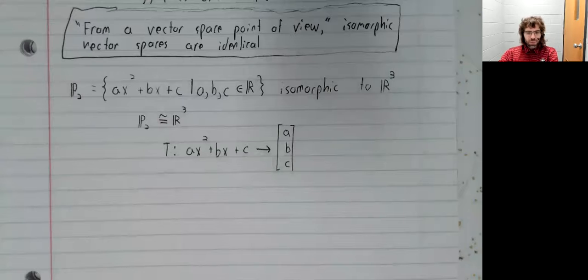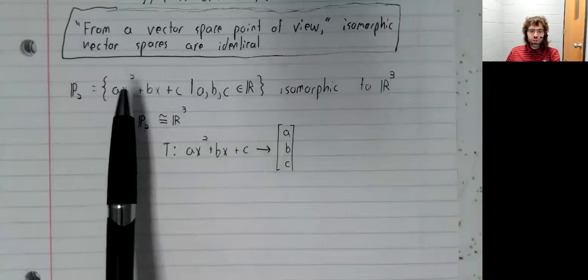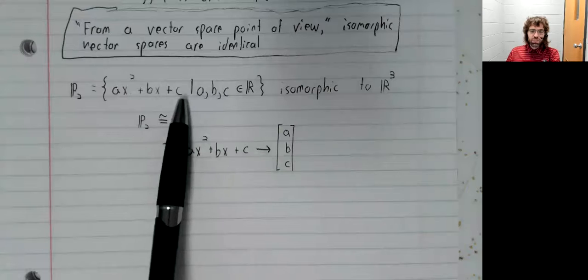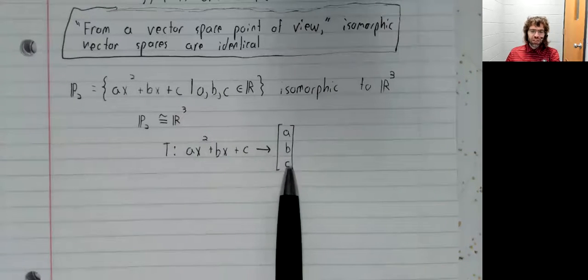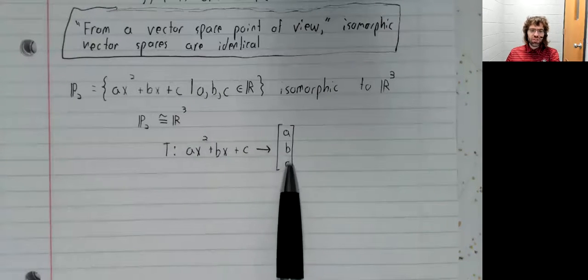That's obviously not to say that mathematically there is no difference. It's just to say that to see that difference, you have to step out of the vector space setting. Like what are things we can do to these polynomials that we can't do to these vectors?